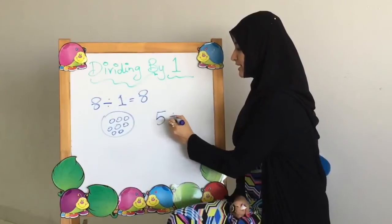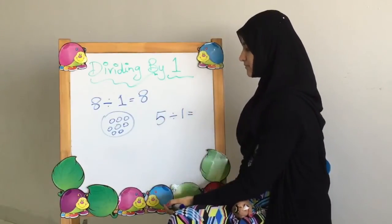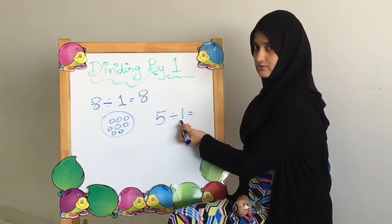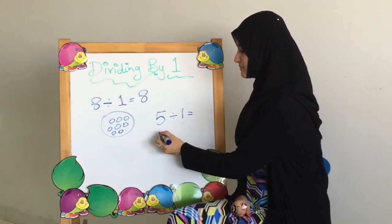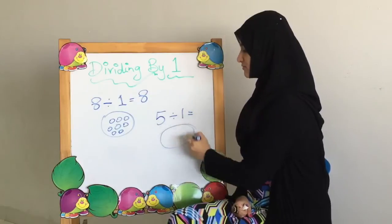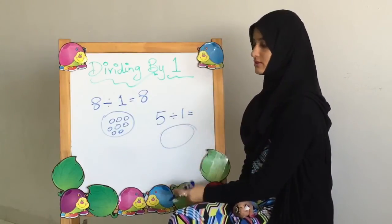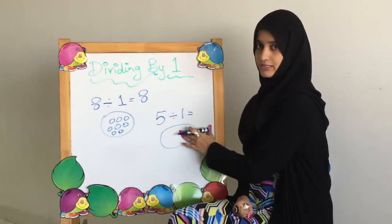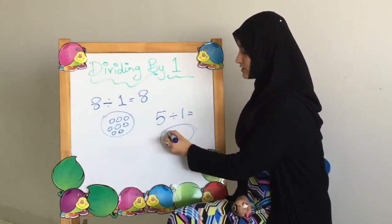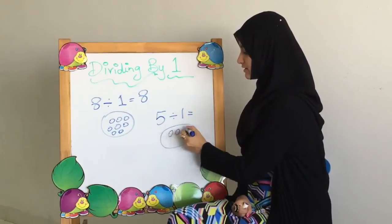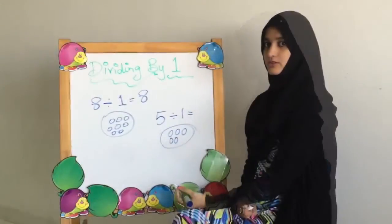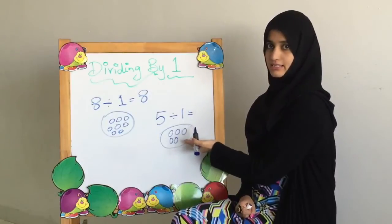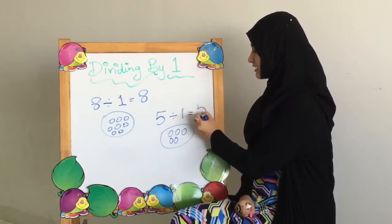5 divided by 1. The divisor is 1, so we need to make one set. The number we are going to distribute is 5. We have only one set, so we are going to put the number 5 in here — all our balls go here because there are no other sets. The answer is the set size: there is only one set and the set size is 5. So that's our answer.